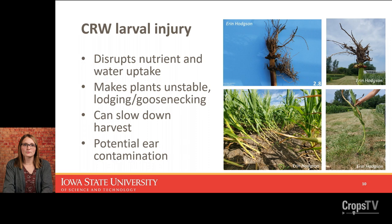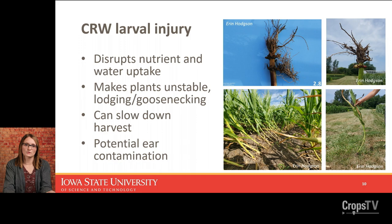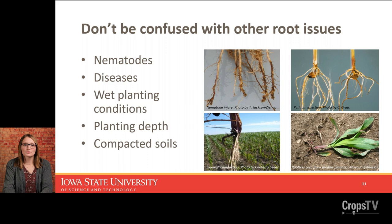The reason we care so much about corn rootworm is primarily because the larvae are causing injury to corn roots — literally consuming the corn roots, making the root system smaller, disrupting nutrient and water uptake, and making that plant unstable. We get yield loss because the plant is unhealthy and not getting enough nutrients or water. We also get yield loss at harvest when plants are lodged or laying on the ground — very difficult to pick those up. There's also the added component of potential ear contamination and reduced seed quality, since those ears are close to the soil surface and could be contaminated with pathogens.